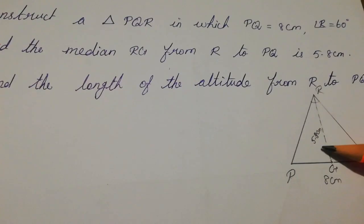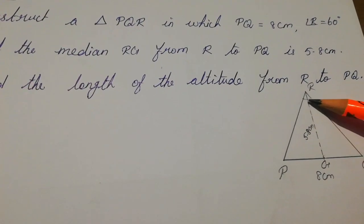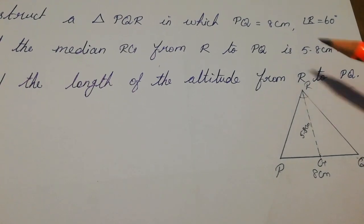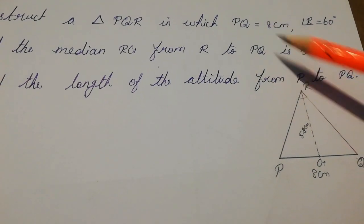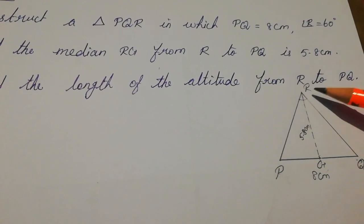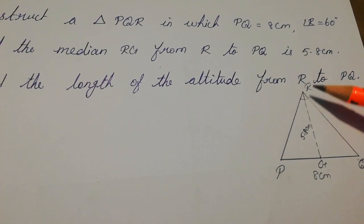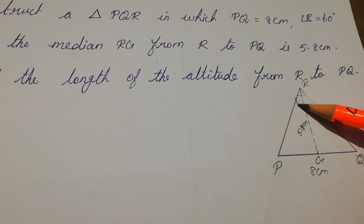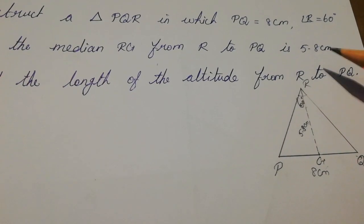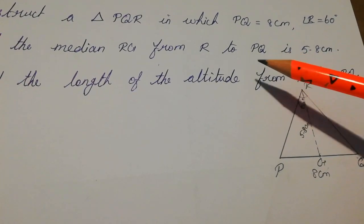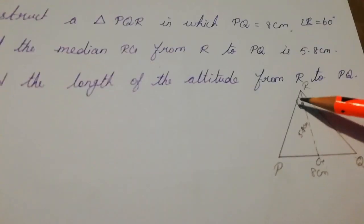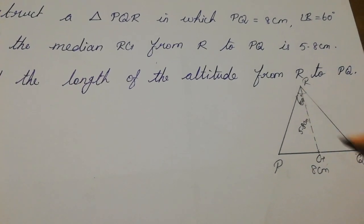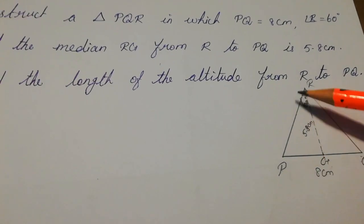Okay, so first we draw the rough diagram of triangle PQR in which PQ is 8 centimeter, angle R is 60 degrees, and median RG is 5.8 centimeter. This is the rough diagram.